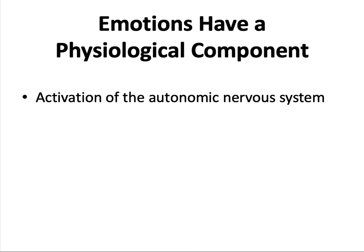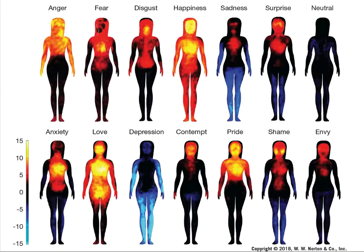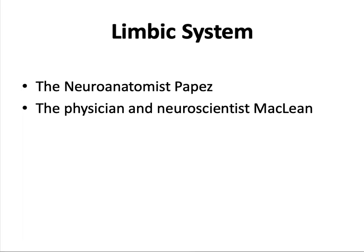Emotions have a physiological component. Emotions involve activation of the autonomic nervous system to prepare the body to meet environmental challenges. Body maps represent areas that are more active (warm colors) or less active (cool colors) when people consider how various emotions make them feel, with the color bar reflecting the extent of increasing or decreasing activity.